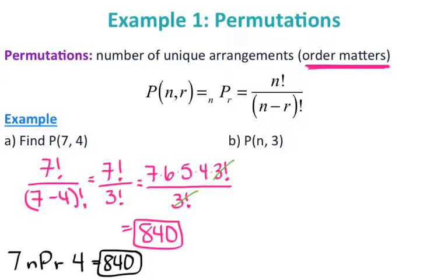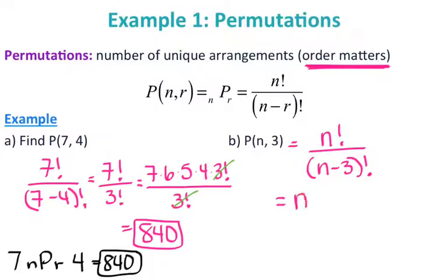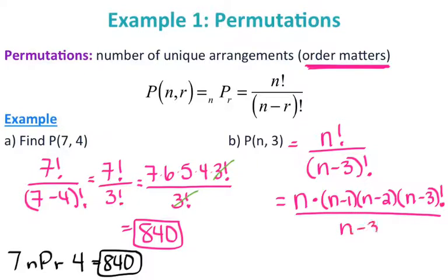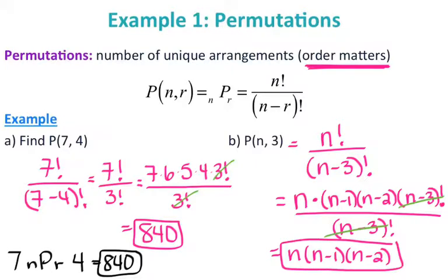For letter B, I don't give you a number for N — just the variable — so we're forced to use the formula. That gives N factorial over (N minus 3) factorial. Expanding the numerator: N times (N minus 1) times (N minus 2) times (N minus 3) factorial. The (N minus 3) factorials cancel, leaving N times (N minus 1) times (N minus 2). You do not have to multiply that out — that is your answer for letter B.